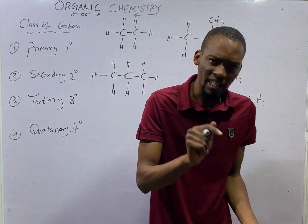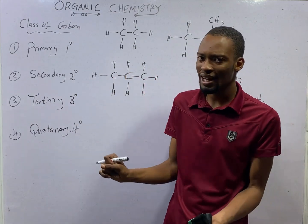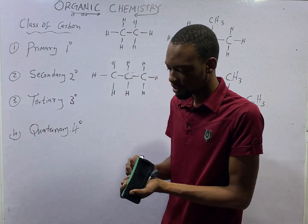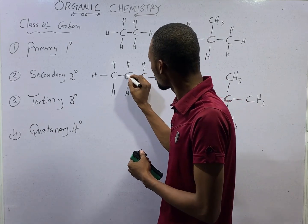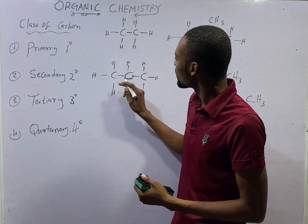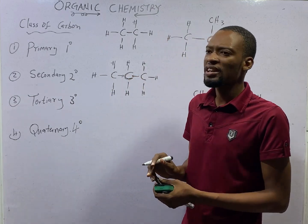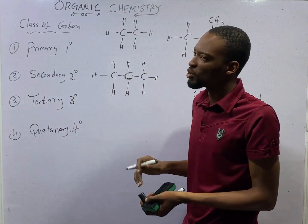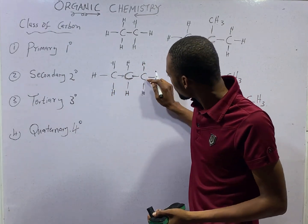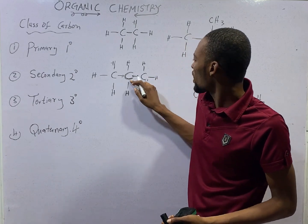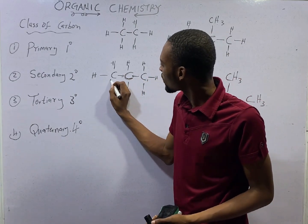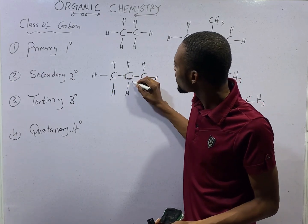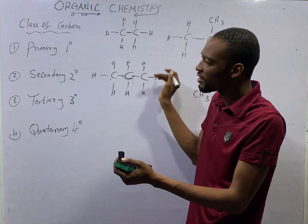What is secondary carbon? Secondary carbon is simply a carbon that has two other carbons attached to it. In this compound, you can see this carbon is attached to this one, and this other carbon is directly attached to it as well. A carbon atom that has two other carbon atoms directly attached to it is referred to as secondary carbon. The other carbons here each have just one attached — those are primary — but this one is a secondary carbon, with two other carbons directly linked to it.